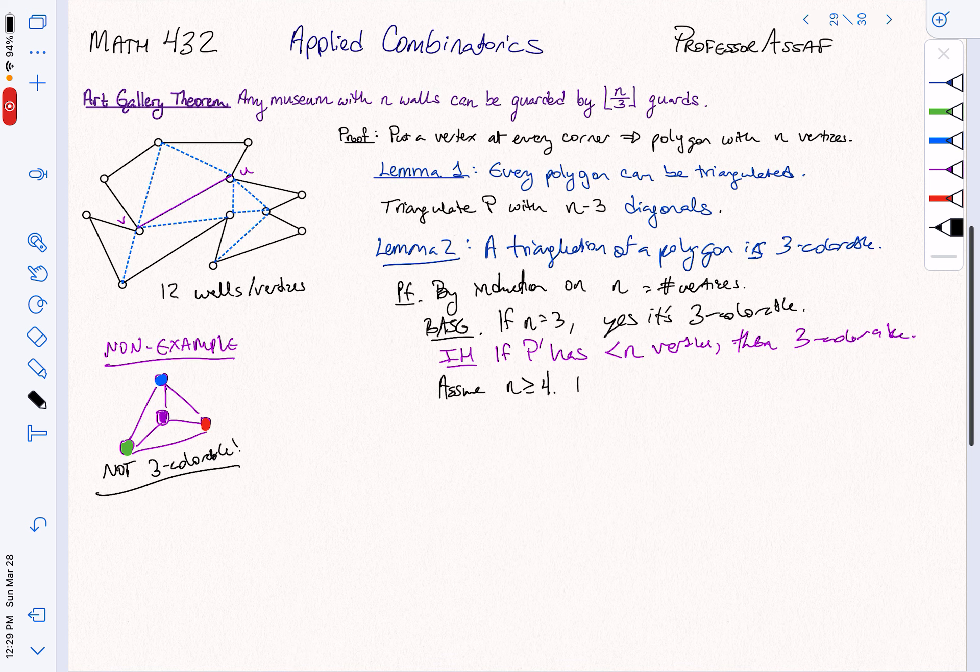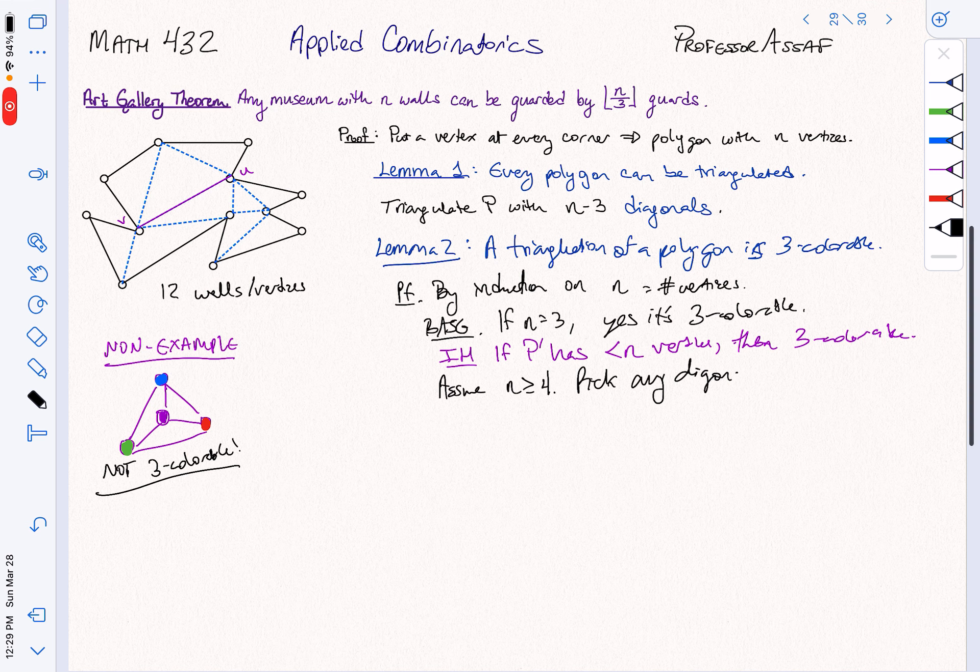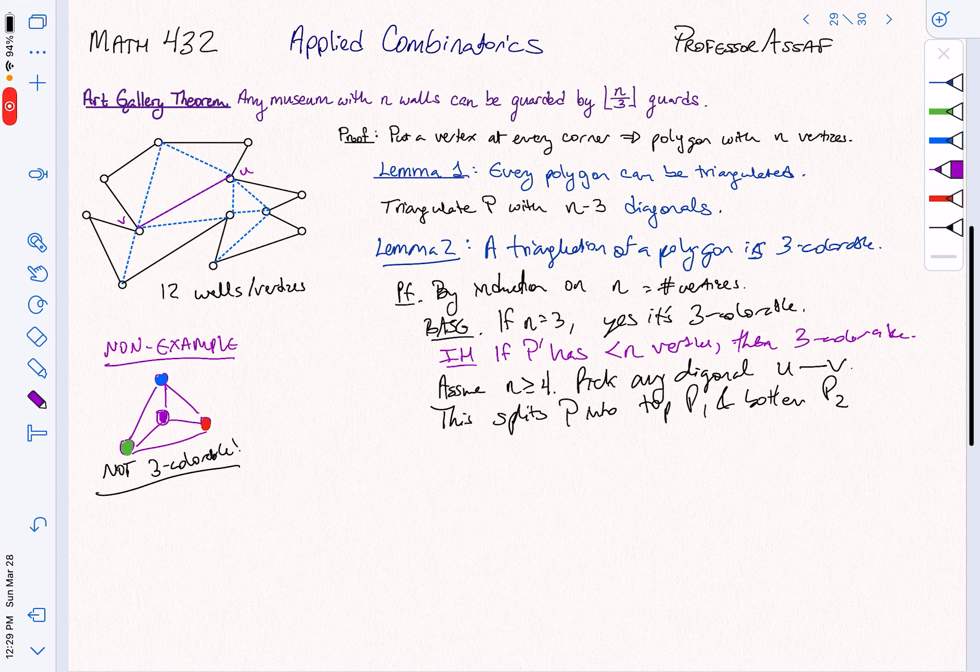So we're going to pick any diagonal. Pick any diagonal, because now we have those diagonals, say u to v. And that's what I've just done there. This splits p into the top p1 and the bottom p2, based on which side of that diagonal they're on. This one, by the inductive hypothesis, these two are both three colorable.